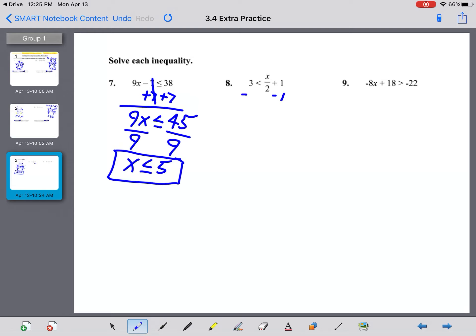For number 8, we're going to subtract 1 on both sides. 3 - 1 is 2, so 2 is less than x/2. To undo division, we need to use multiplication, so I'm going to multiply both sides by 2, and 2 times 2 is 4, so 4 is less than x. And if you like to rewrite it in terms of x, x is greater than 4.